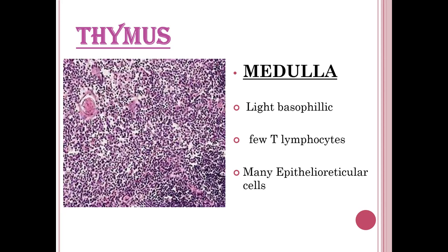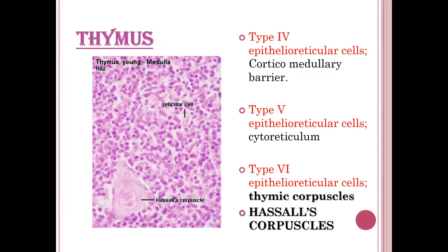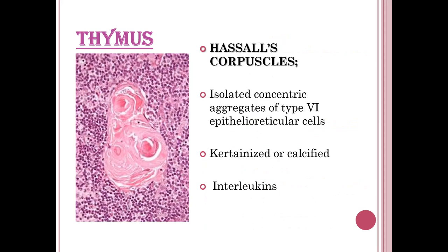Type 3 epithelial reticular cells form the cytoreticulum. Type 4 epithelial reticular cells form the corticomedullary barrier. Type 5 epithelial reticular cells form the cytoreticulum. Type 6 epithelio-reticular cells form thymic corpuscles, also called Hassall's corpuscles, which are isolated concentric aggregates of type 6 epithelio-reticular cells that are keratinized or calcified and produce interleukins.